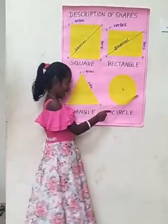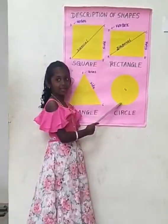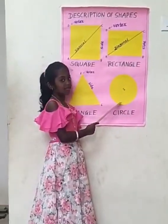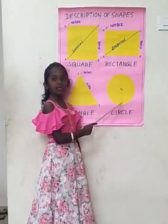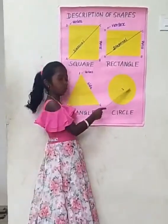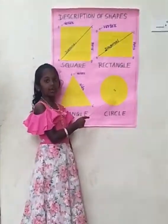This is a circle. A circle has no sides. It has a center.